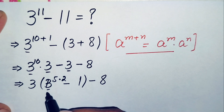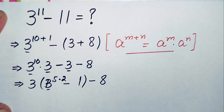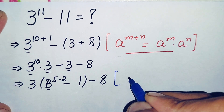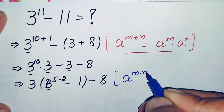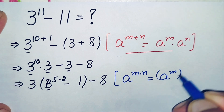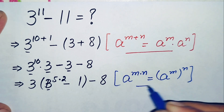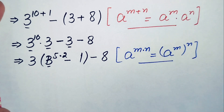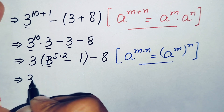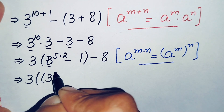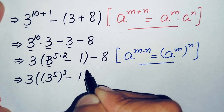Here we will use another exponent math property: a^(m×n) = (a^m)^n. Using this exponential property, this equation will become: 3 times (3^5)^2 minus 1, minus 8.